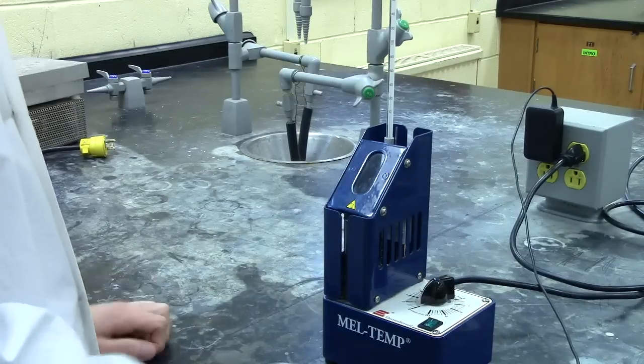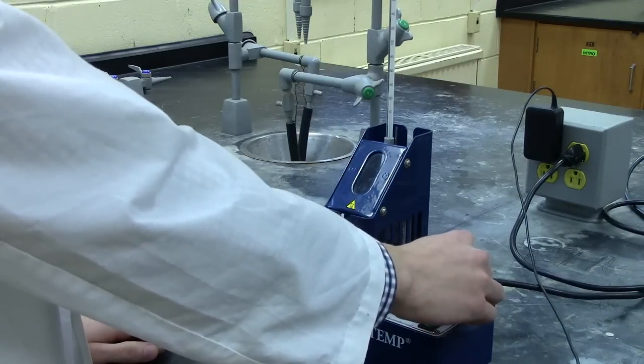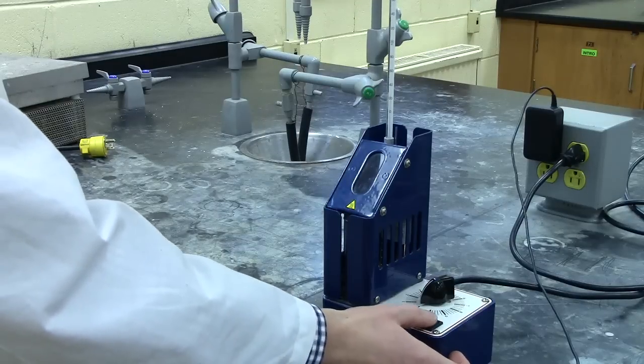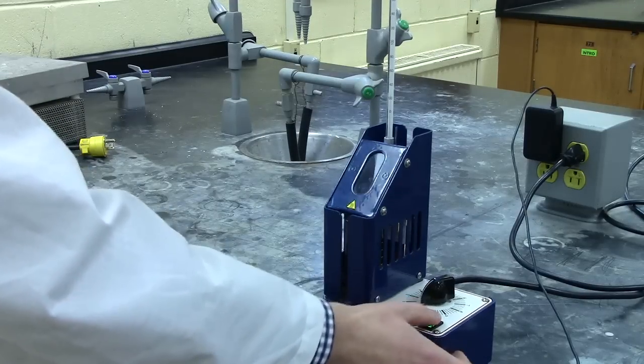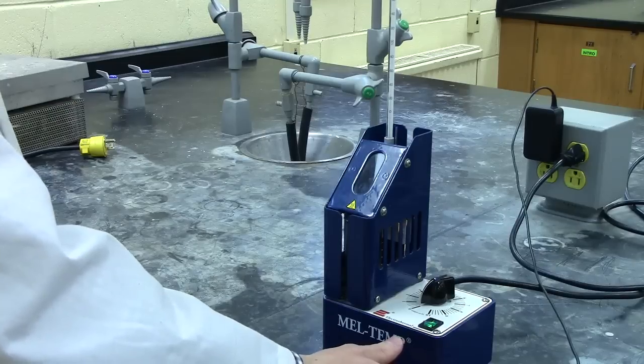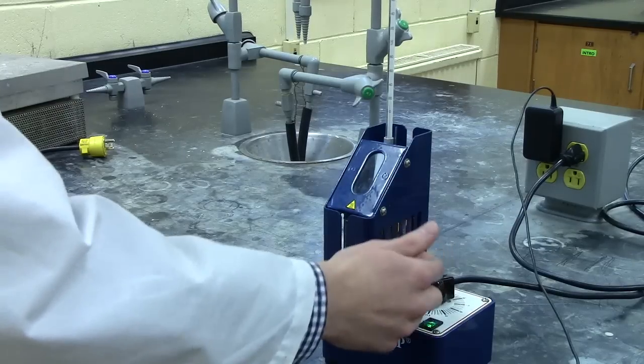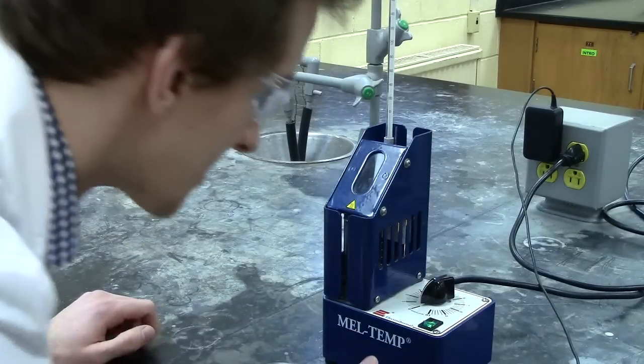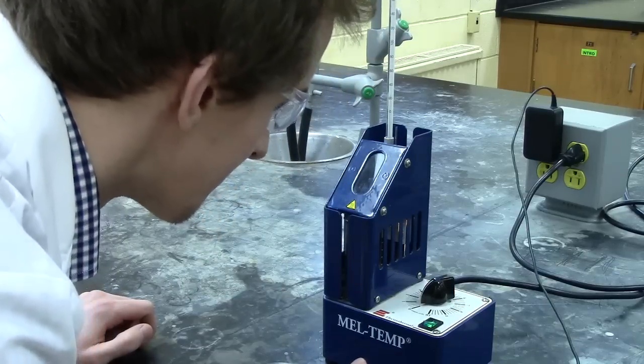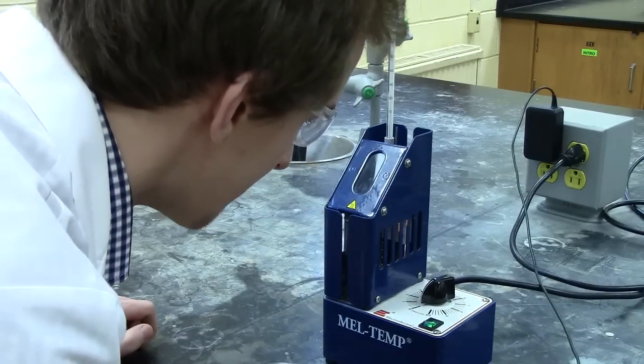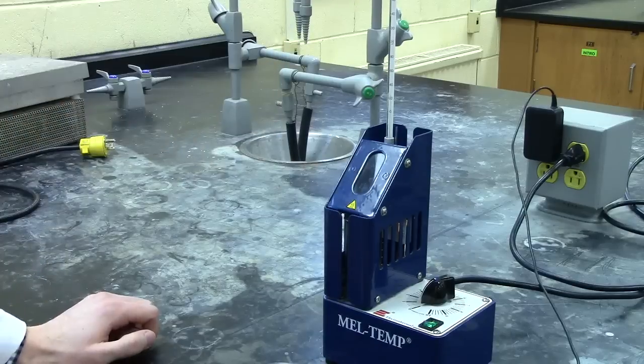To turn on the Mel-Temp, ensure that the power level is at zero. The on switch located on the side of the Mel-Temp can be pressed on. By turning on the switch, you'll see a light goes on within the Mel-Temp where you can actually look through and see your sample roughly 15 centimeters away within one of the three chambers present.